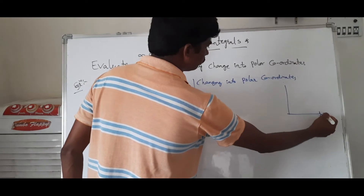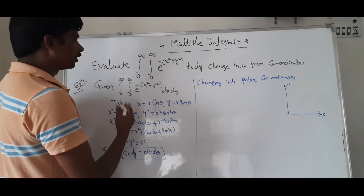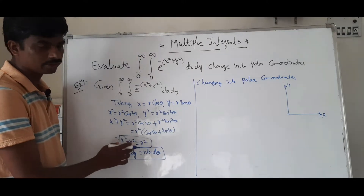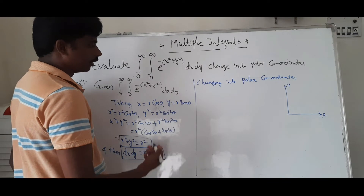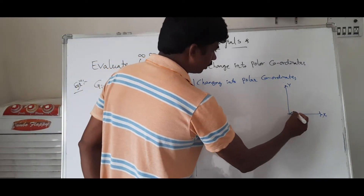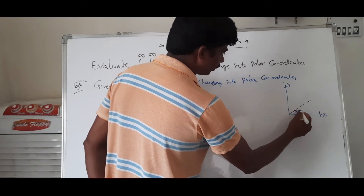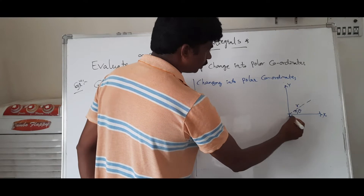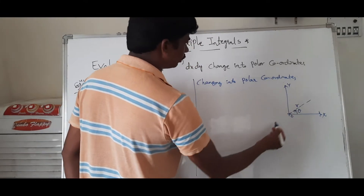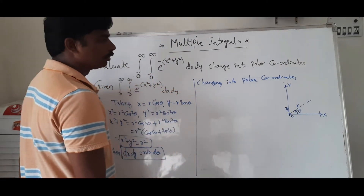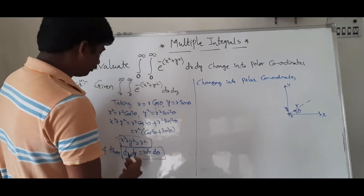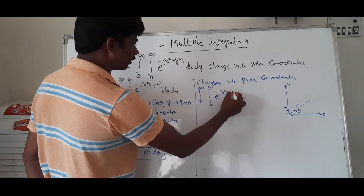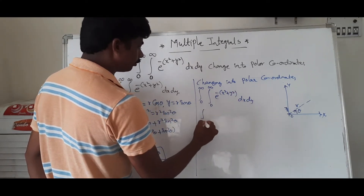Looking at the x-axis to y-axis, x² + y² = r², and r represents a circle. In polar coordinates, the angle θ goes from 0 to π/2, and r goes from 0 to infinity. So the limits are: θ from 0 to π/2, and r from 0 to infinity.